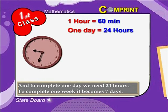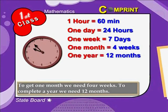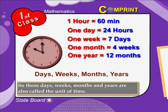To complete 1 week, it becomes 7 days. To get 1 month, we need 4 weeks. To complete a year, we need 12 months. So, these days, weeks, months, and years are also called units of time.